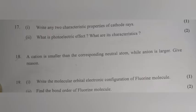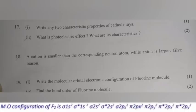Question 19.1: Write the molecular orbital configuration of the fluorine molecule. Answer: The molecular orbital configuration of F2 is: σ1s², σ*1s², σ2s², σ*2s², σ2pz², π2px², π2py², π*2px², π*2py².